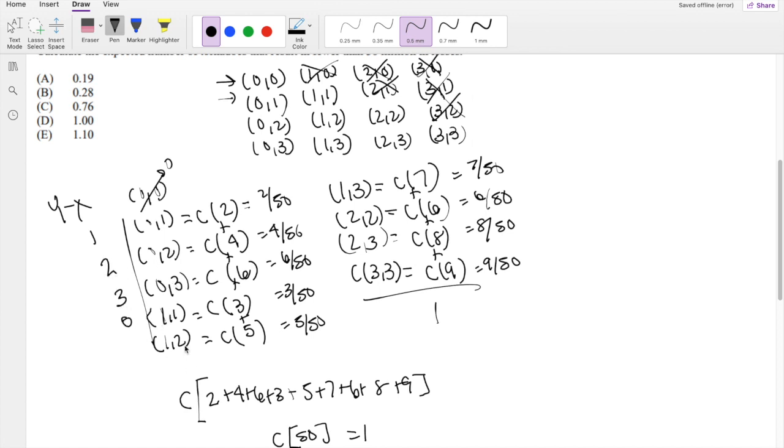1 minus 1, which is 0. 2 minus 1, which is 1. 3 minus 1 is 2. 2 minus 2 is 0. 3 minus 2 is 1. And 3 minus 3 is 0.